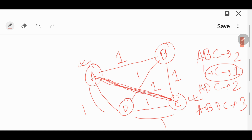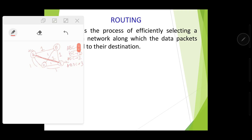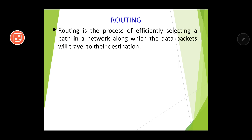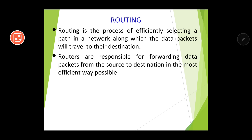Who ensures that data packets move through the best path? That is ensured by a device called a router. Routers are responsible for forwarding data packets from the source to the destination in the most efficient way possible, ensuring the packets reach their destination via the best path.